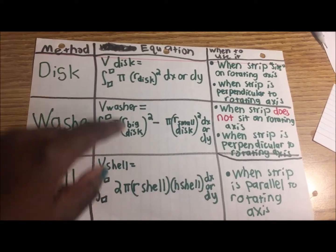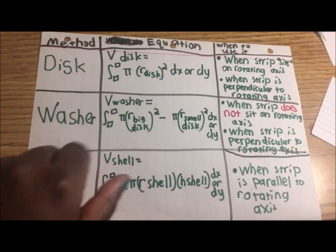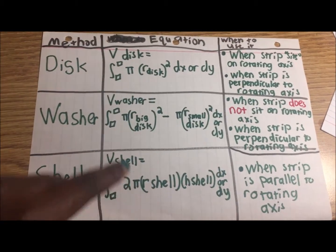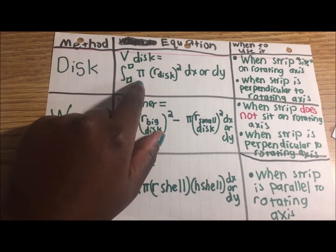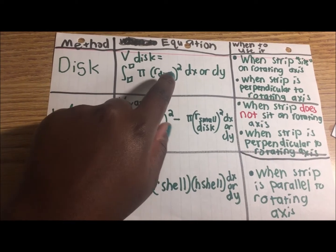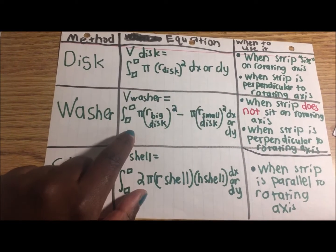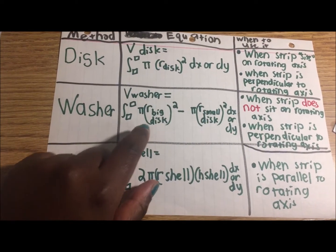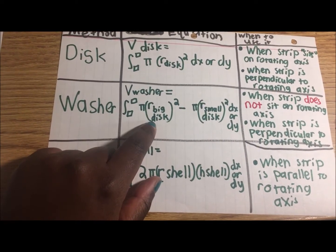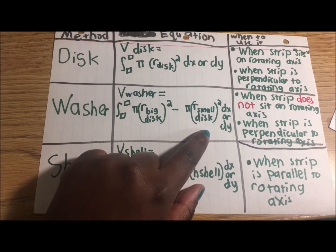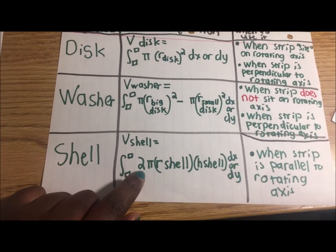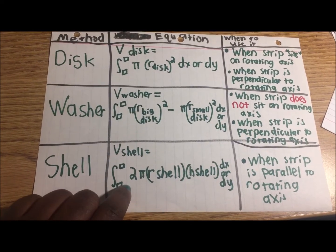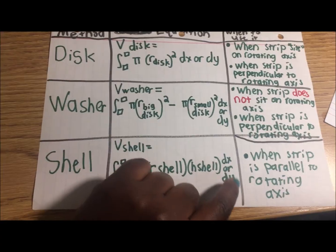Here are the equations for each method. The volume for disc is the integral of pi r-disc squared dx or dy. The volume of washer is pi r-outer squared minus pi r-inner squared dx or dy. And the volume of shell is the integral of 2 pi r-shell times h-shell dx or dy.